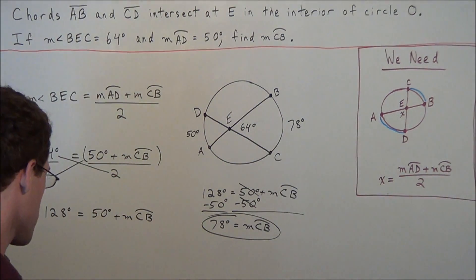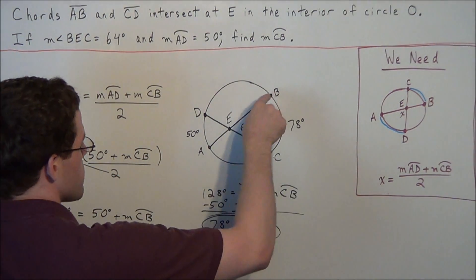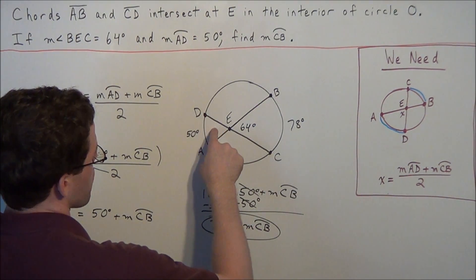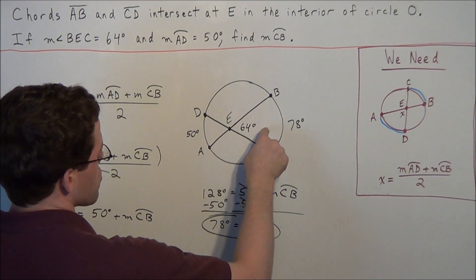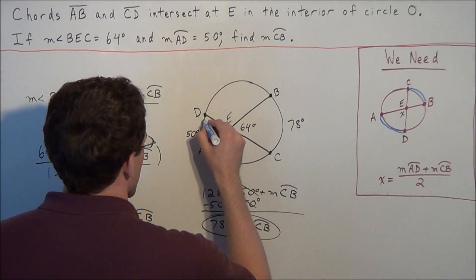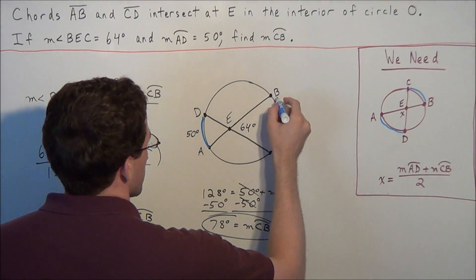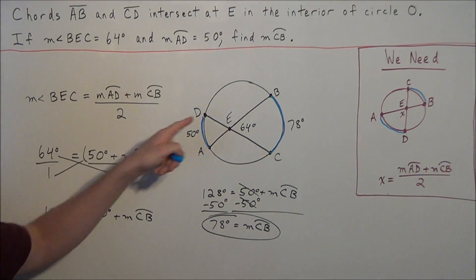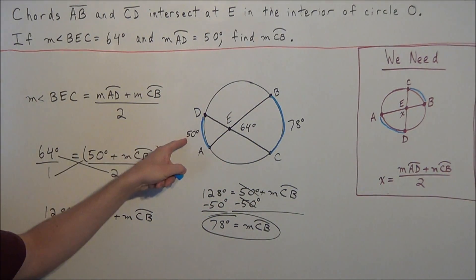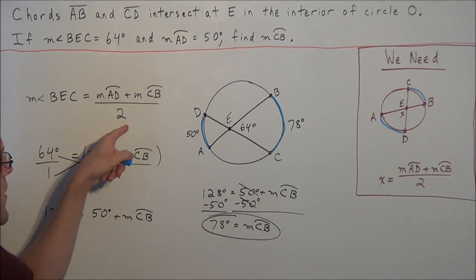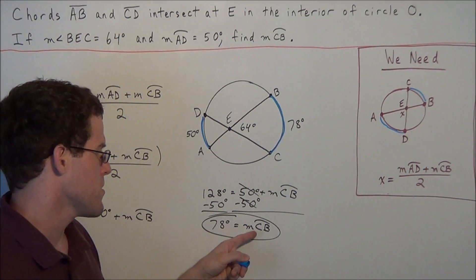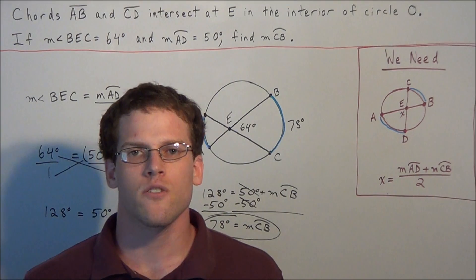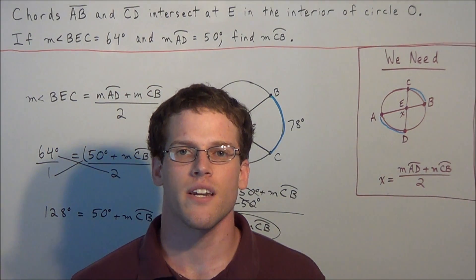Just to recap: we were given the measure of angle BEC. Note that angle AED is also 64 degrees because these two are vertical angles. The two arcs sectioned off were arc AD and arc BC. That's why we set up the equation with angle BEC equal to the sum of arcs AD and CB divided by 2, arriving at our answer: the measure of arc CB is 78 degrees. This concludes the video on angles formed by intersecting chords. Thank you all for watching and I hope this was helpful.